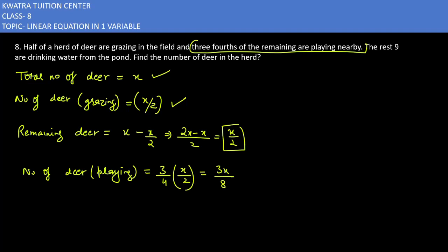Next, what is the number of deer drinking water? Number of deer drinking water would be 9.